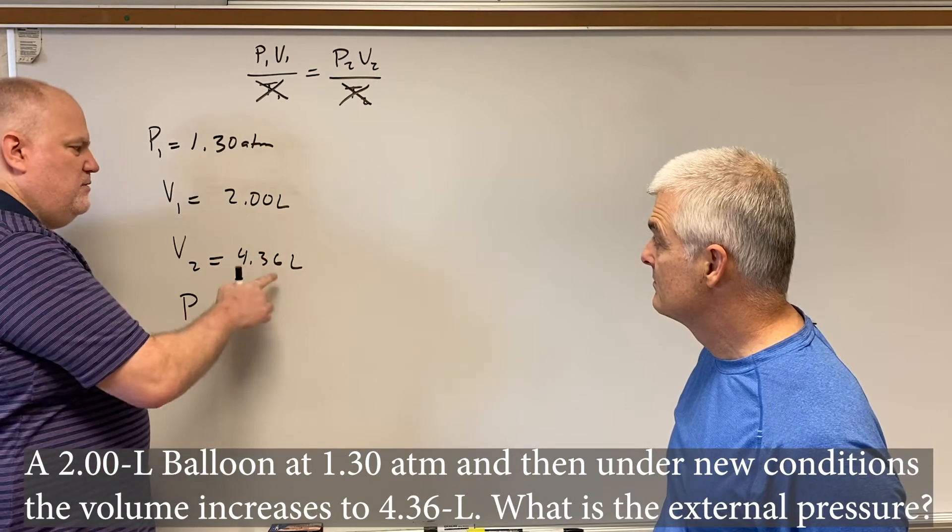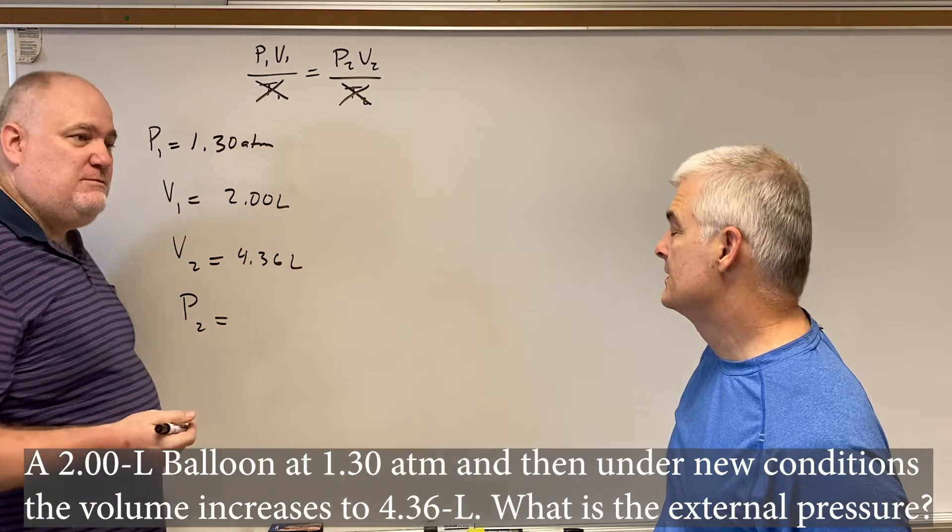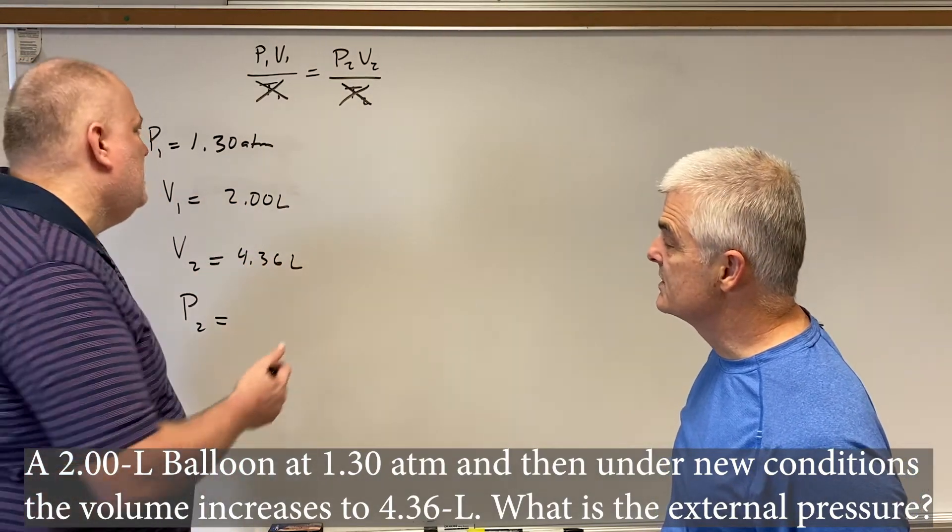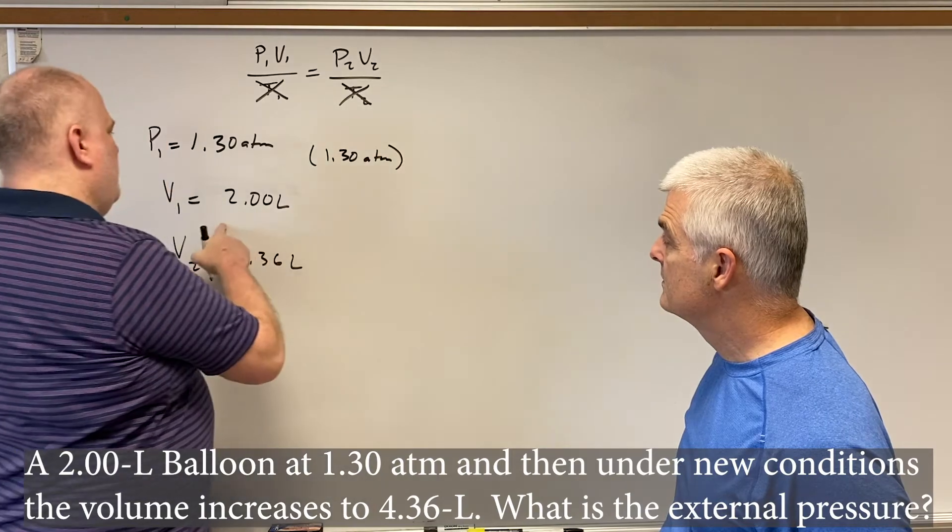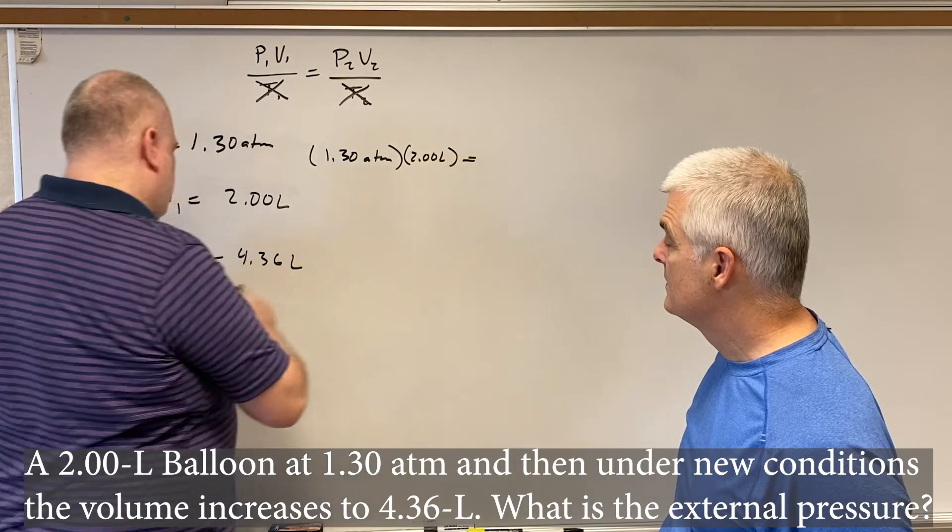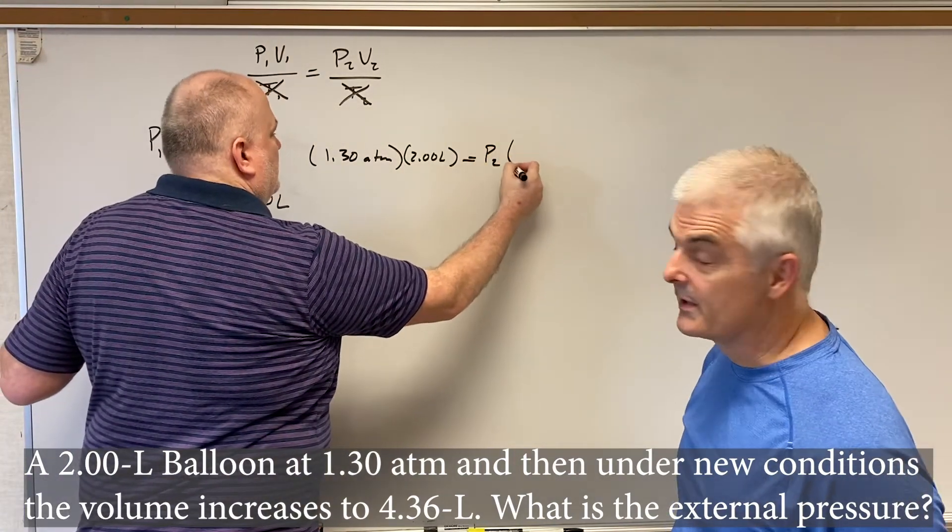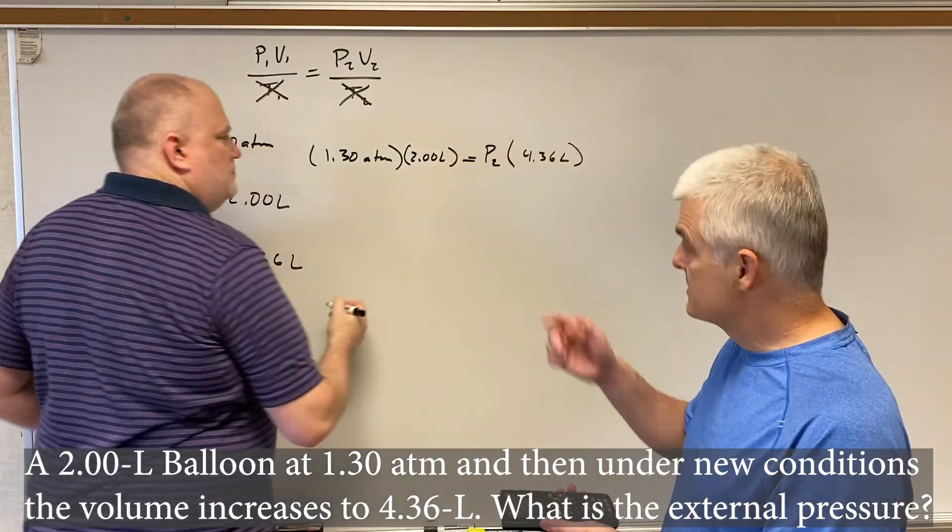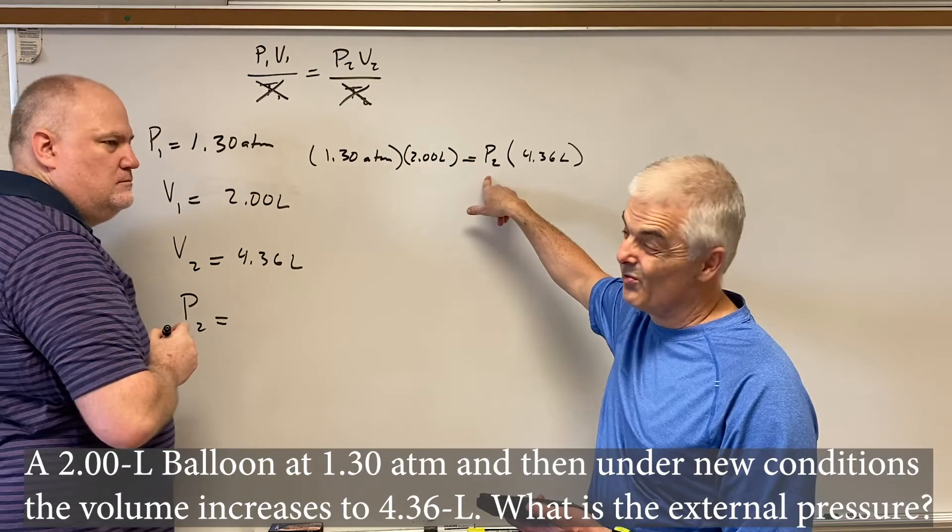And also, I was really gentle in this problem here with 2 liters and 4 liters. Do you realize they could have given us milliliters here and liters here? Yeah. And we would have had to convert to the same unit. And so the key is it has to be in the same unit. Yeah. As long as in the same unit, we're okay. So we can just plug our numbers in, right? Yeah. So our P1 right here, wouldn't it be 1.30 atm? And our V1 is 2.00 liters. 2.00, yeah. And it's going to be equal to, and in this case here, we know what our V2 is, but we don't know what our P2 is. So V2 is our X, if you will, right? And our V2 is 4.36 liters.